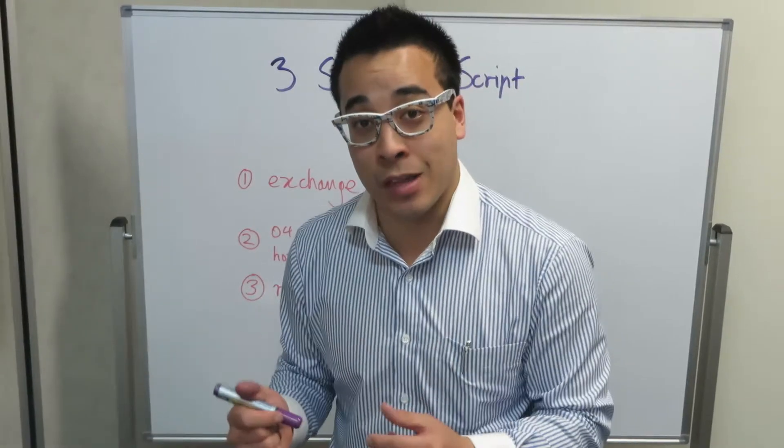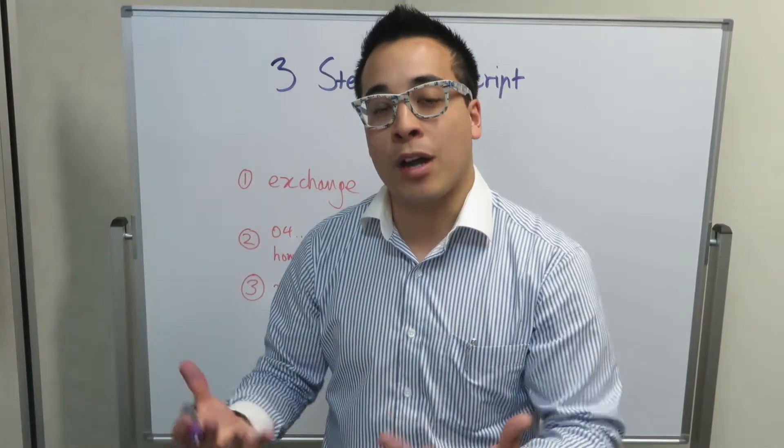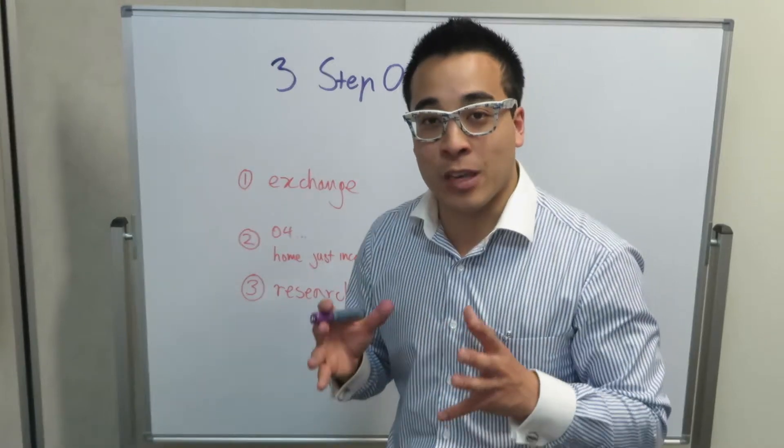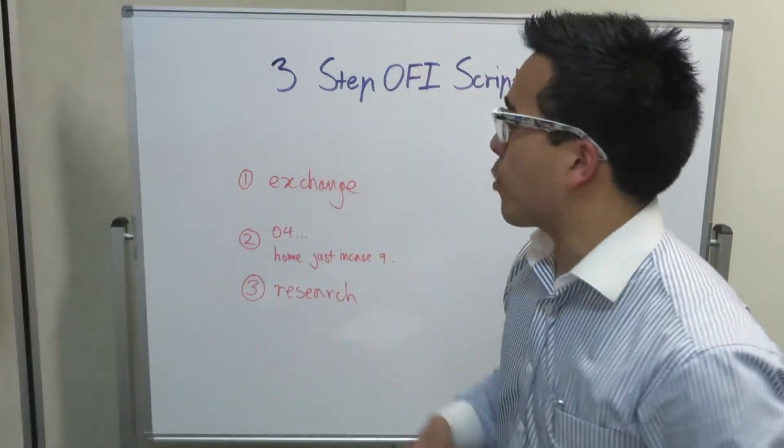Because they're coming to you, you're not going to them. They're coming to your territory, you're not going into their territory. So they're a lot more open-minded to give you information. So I'm talking about how to get prospective vendor information from the open for inspection. Real simple, really simple three-step approach.